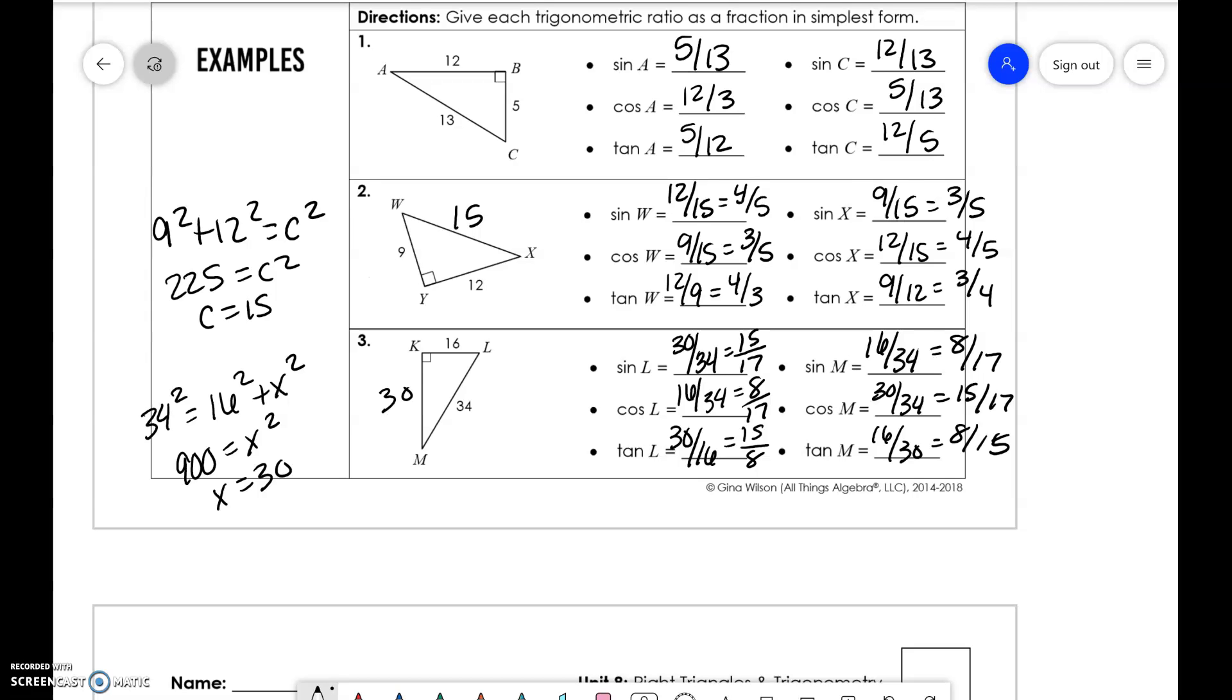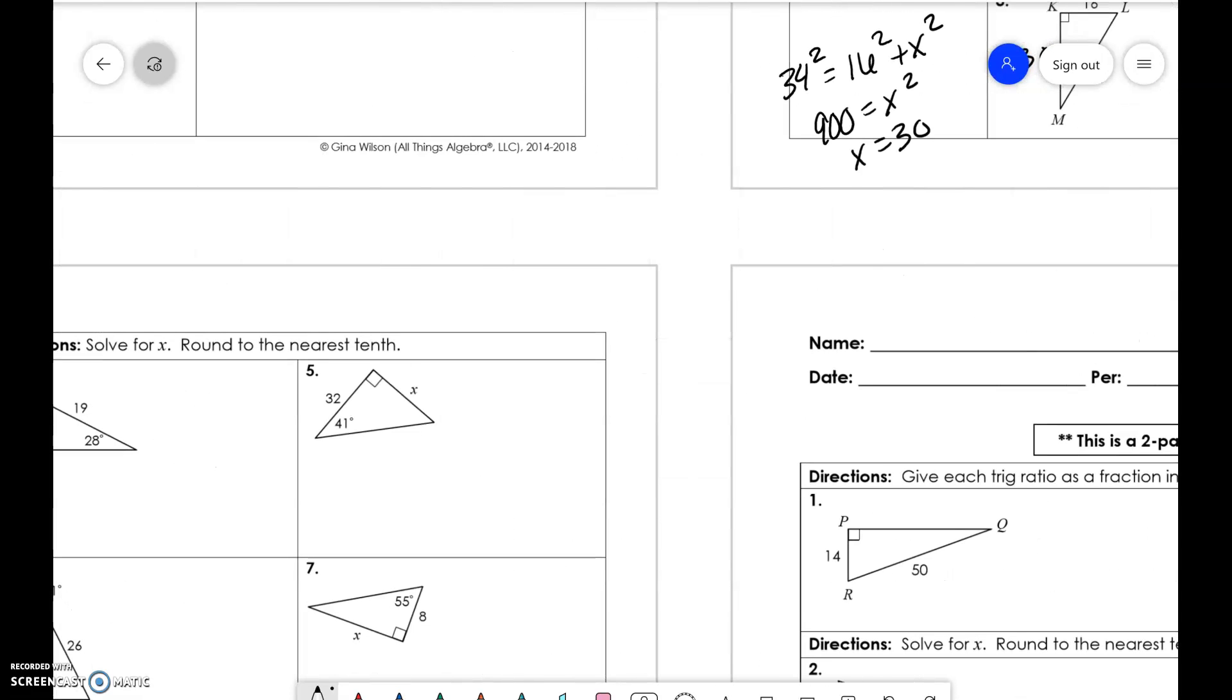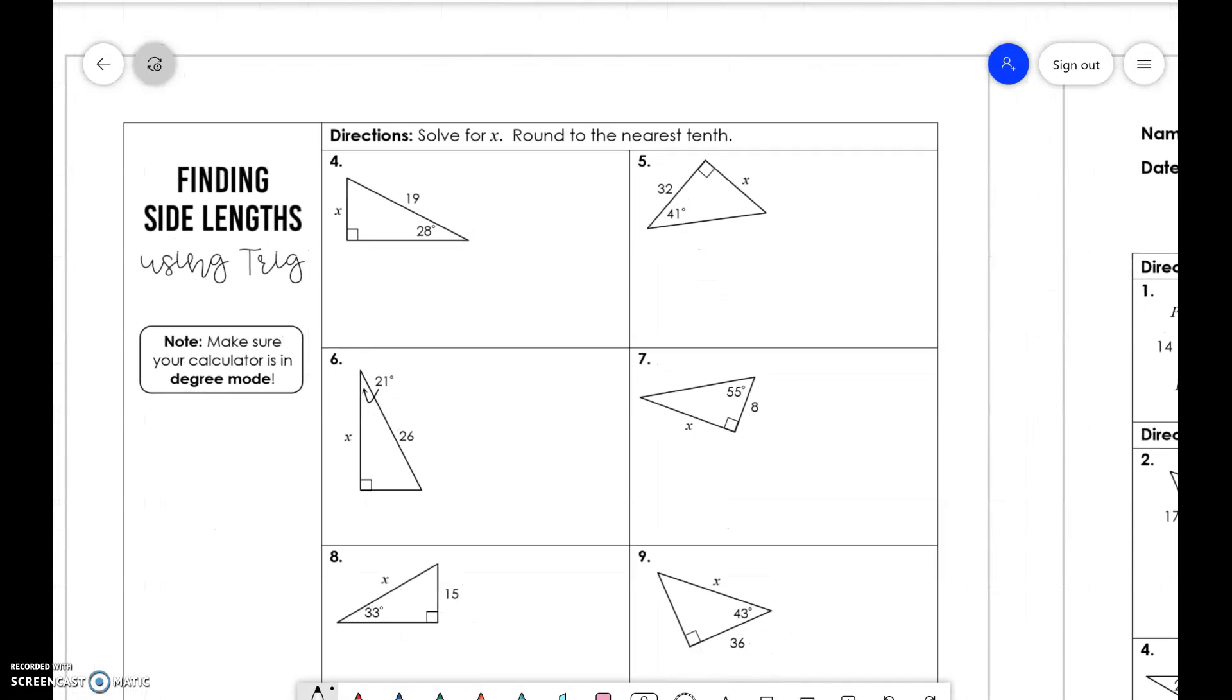Now we're going to really dive down into how we do these problems because we're actually going to find a side length. Finding side lengths using trig. So the same thing we do is we're just setting this up with the angle and a trig function. So if we look at this 28 here, this side is our opposite side, and this is the hypotenuse. So what uses opposite and hypotenuse? That's going to be sine. So we're going to do sine of 28 degrees equals x over 19. And then we would solve this as any other problem. We would do 19 times sine of 28 equals x.